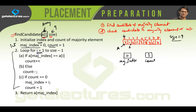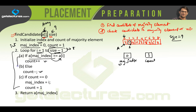We then have a loop from i=1 to size-1, so i runs from 1 to 8. Inside the loop, if a[maj_index] equals a[i] — that is, the value pointed to by maj_index equals the value at i — we do count++. Otherwise, we do count--. Initially, maj_index points to 4 and i=1 points to 1, which are not equal, so count-- is executed and count becomes 0.